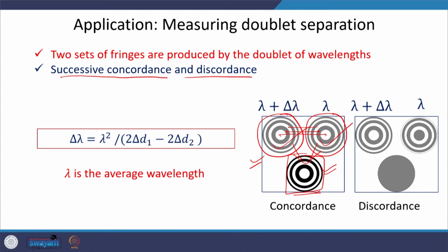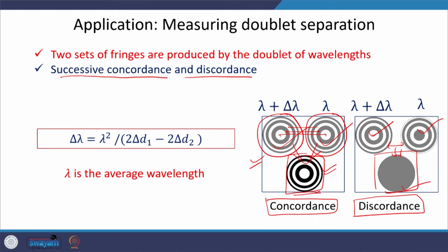Similarly, if the dark rings of wavelength one fall on the bright rings of wavelength two, we get uniform illumination. The dark is compensated by the bright and vice versa, resulting in uniform illumination in the field of view. This phenomenon is called discordance. In summary: better visibility with darker darks and brighter brights means concordance; uniform intensity distribution in the field of view means discordance.